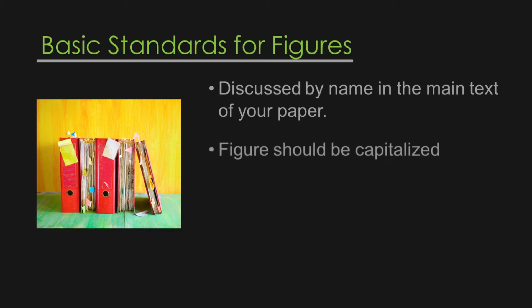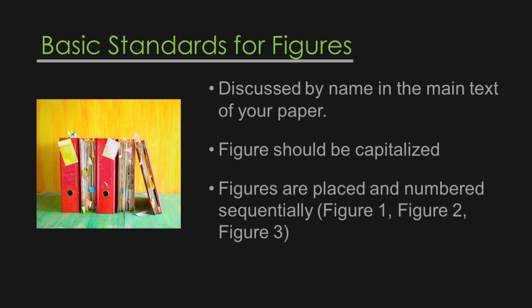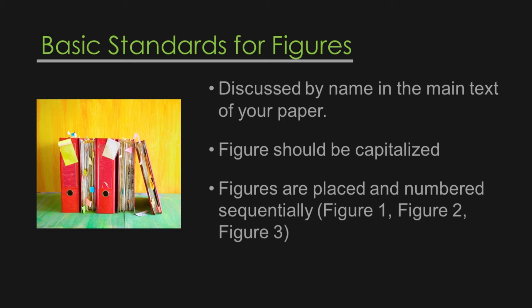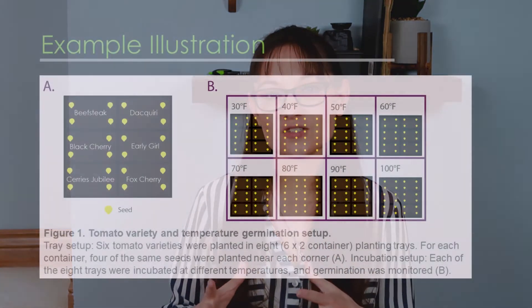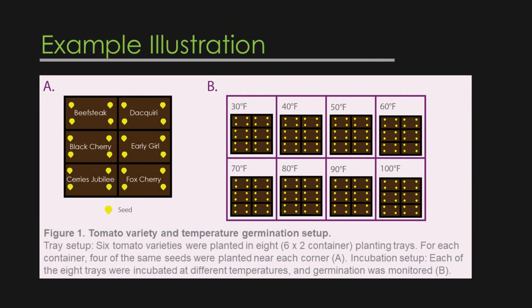The first letter in the word 'figure' should be capitalized. Figures are placed and numbered sequentially — figure one, figure two, figure three, and so on. Use sequential letters to label multiple figures within a figure set. In this illustration here, you can see the figure is named figure one and it contains multiple images with sequential letters each pointing to the specific image within the set.